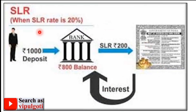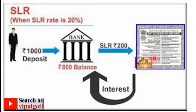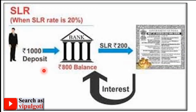To understand SLR with a figure: if the total deposit is 1,000 rupees and SLR is 20%, then 20% of 1,000 rupees equals 200 rupees. The bank has to keep 200 rupees in the RBI in the form of cash, gold, or other securities — separate from CRR. This is called SLR.